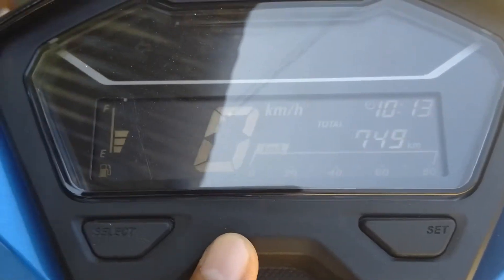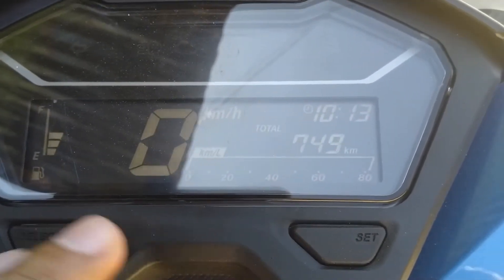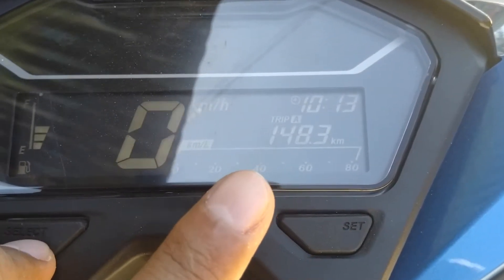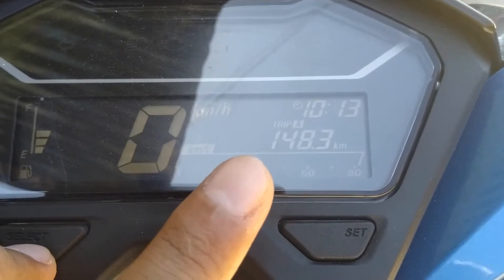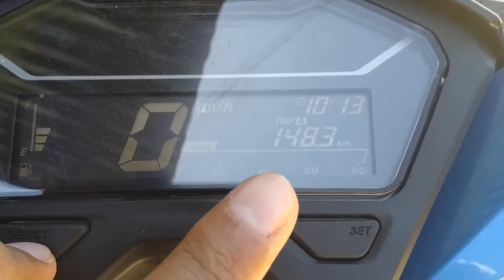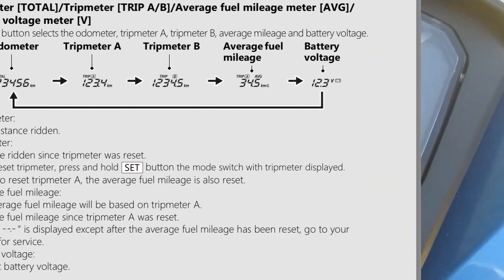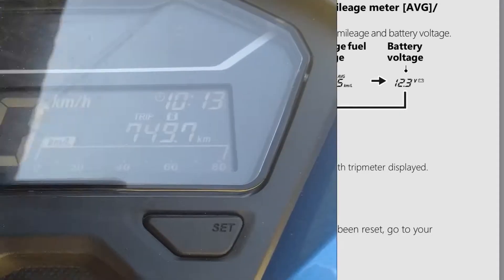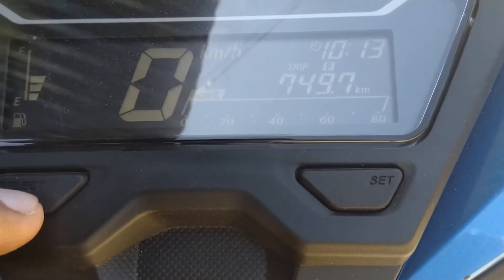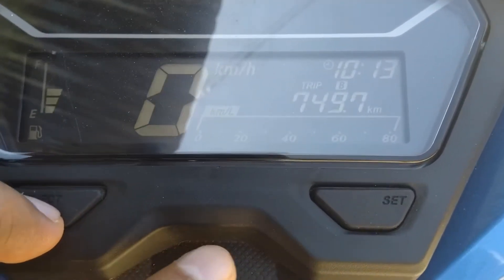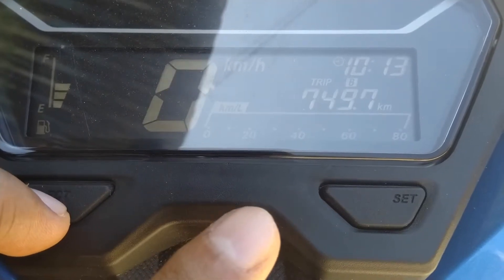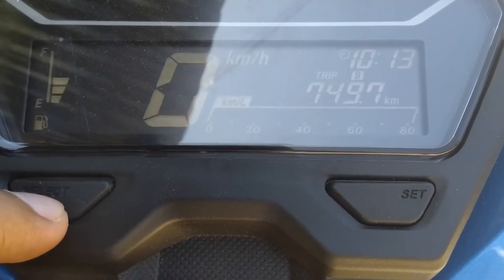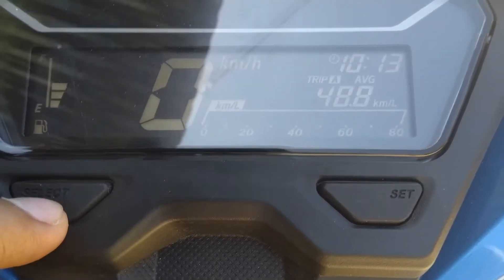There's a setting here where you just click on select — that's for Trip A. Resetting Trip A will also reset the average fuel efficiency number, which we'll be seeing in a bit. Another click gives us Trip B, which shows roughly the distance I have traveled so far since I started using this motorcycle. I haven't touched Trip B, so we're already at about 749.7 kilometers traveled.